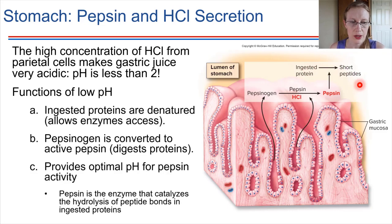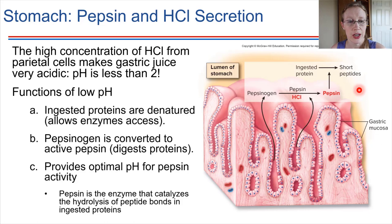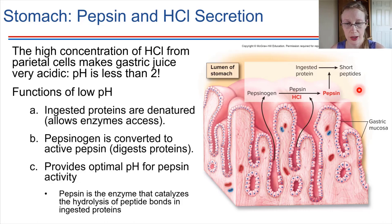Once pepsin is produced, it has an optimal pH range — all enzymes do. Pepsin's optimal pH range is right about pH 2. This helps pepsin to work very effectively in the acidic environment of the stomach.